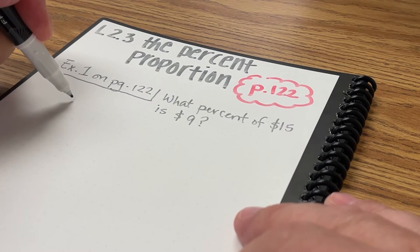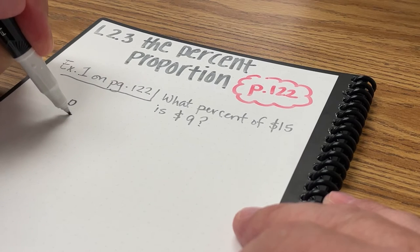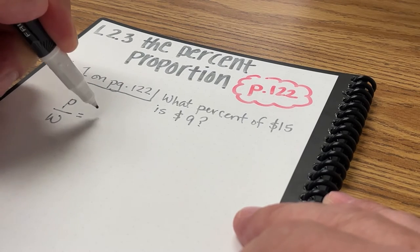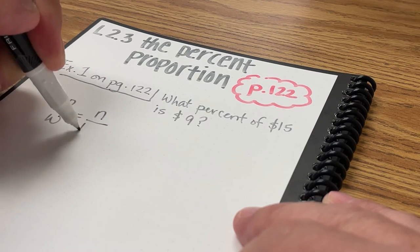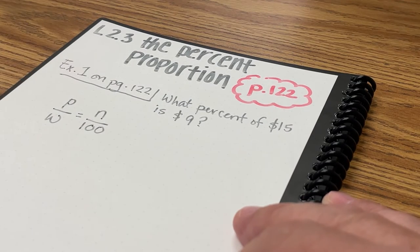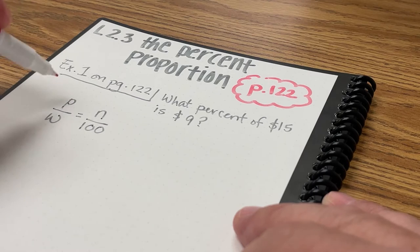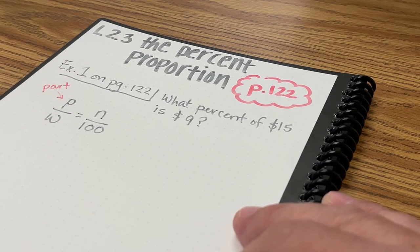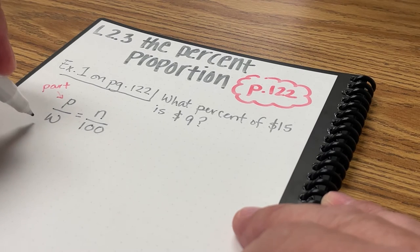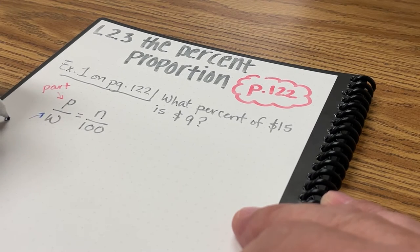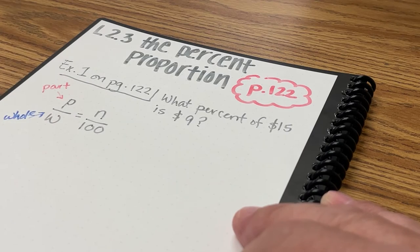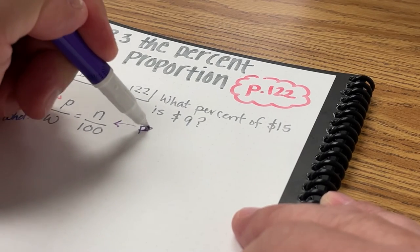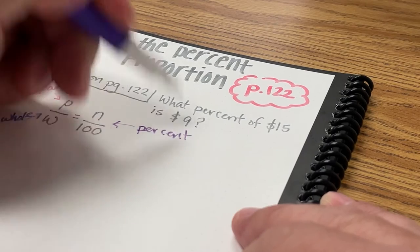In example 1 on page 122, we're trying to find the percent: what percent of $15 is $9? So if I start out with the percent proportion of P, which is the part, over W, which is the whole, and I make that ratio equal to n over 100, and n is going to be the percent.